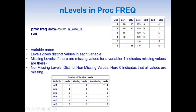Non-Missing Levels gives us the count of distinct non-missing values. For example, col1 has four distinct non-missing values. Col2 has only three distinct non-missing values, so its Non-Missing Levels value is three. Most importantly, col5 has no non-missing values at all — all values are missing — so its Non-Missing Levels value is zero, which indicates that this variable has all missing values.